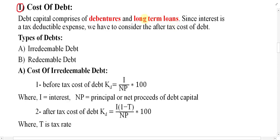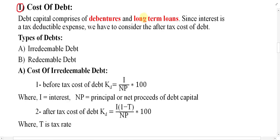Here we have to find out the cost of debt. Cost of debt includes cost of debentures, cost of bonds, and cost of several long-term loans. If the business takes a loan from the market, the loan providers charge interest, and that interest is called a cost from the business perspective. Each source of funds has a cost, and we have to pay a cost for this one as well.